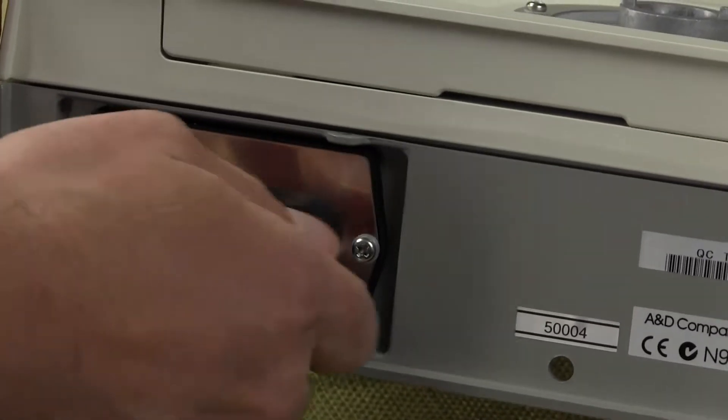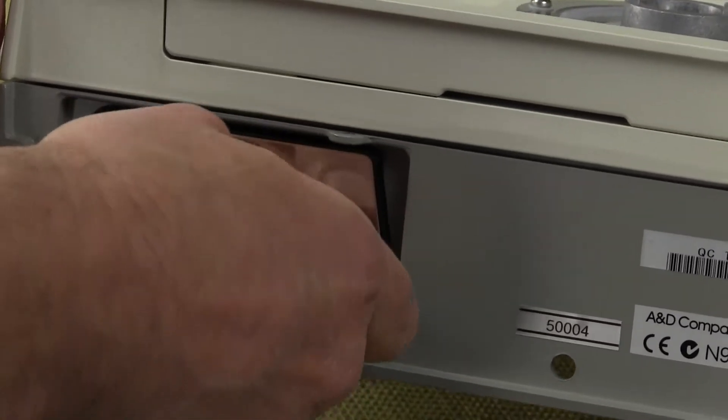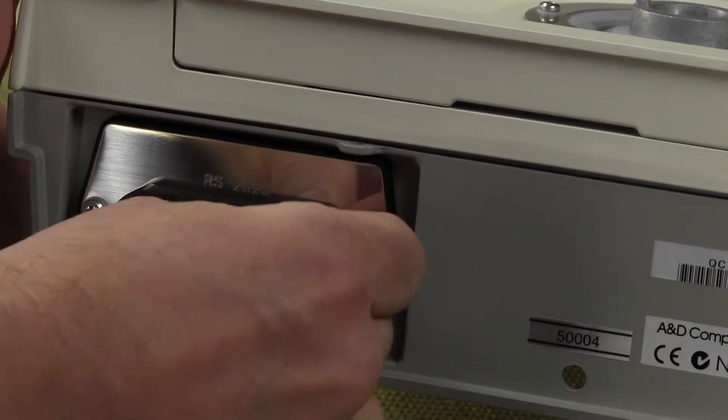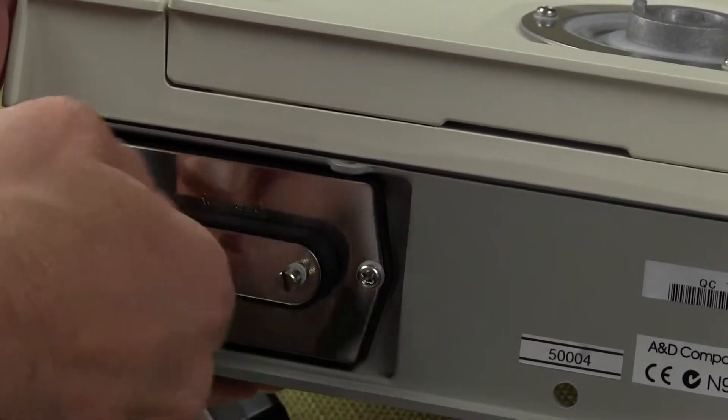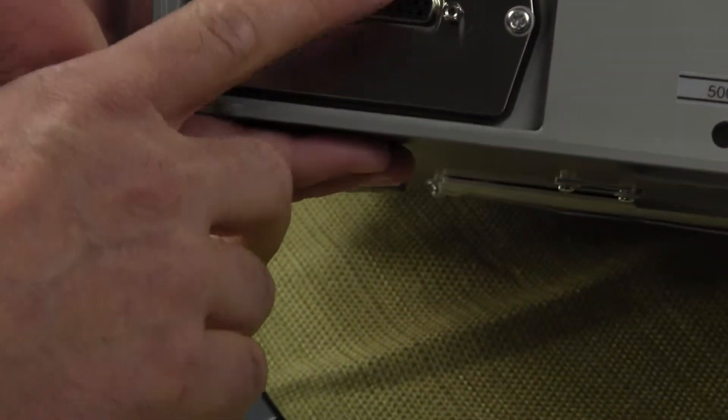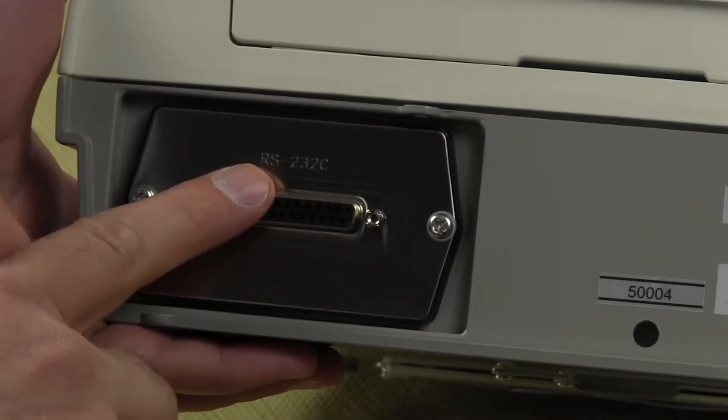We have an RS-232 interface right here. A&D sells a particular waterproof cable. It's pretty expensive, about $200 or so. If you're not in a high wash-down environment, then you can use the standard RS-232 cable. So here's your RS-232 right here.